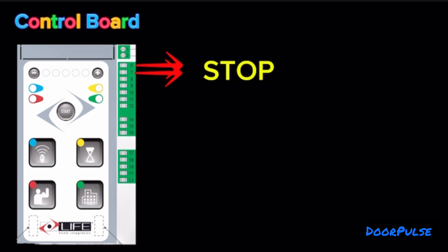Terminals 6 and 7: Stop Terminal. Programmable NC Input. Commands gate stoppage. Can be connected to safety devices such as an emergency stop button. When the command is released, automatic closure never occurs and a new movement command must be given. Leave jumpered if no device is envisaged.